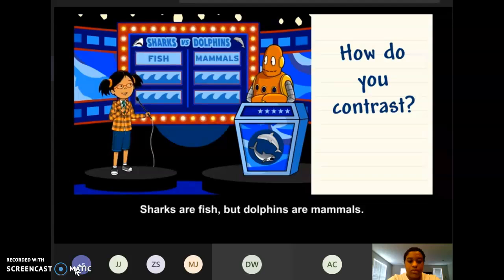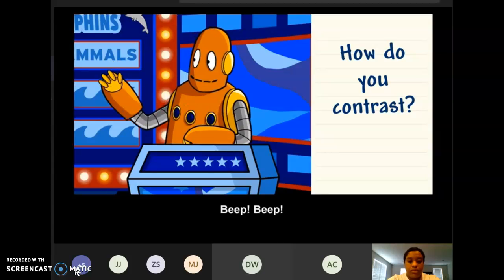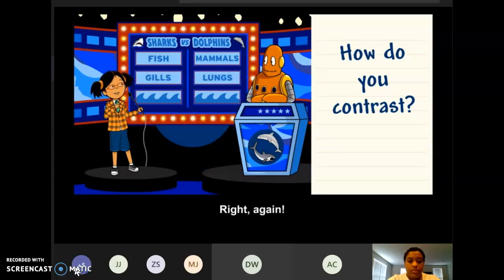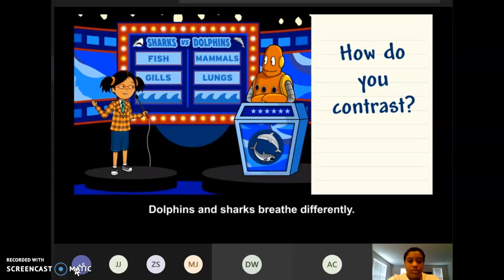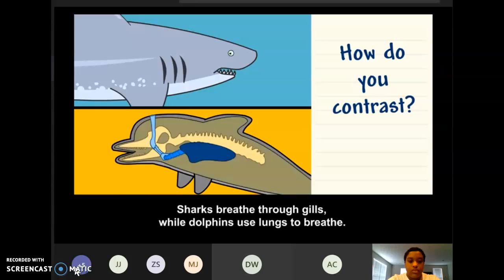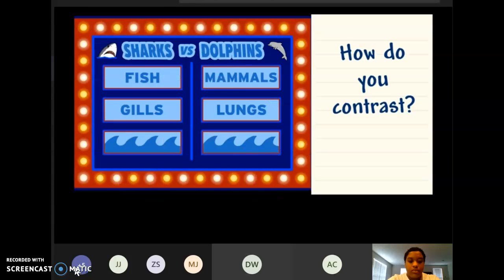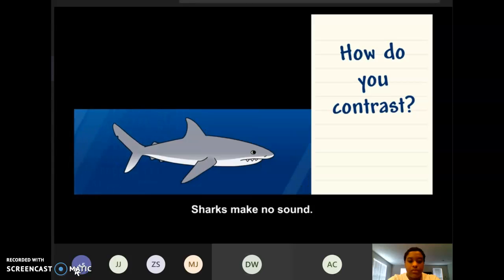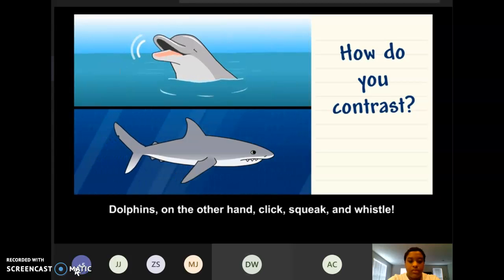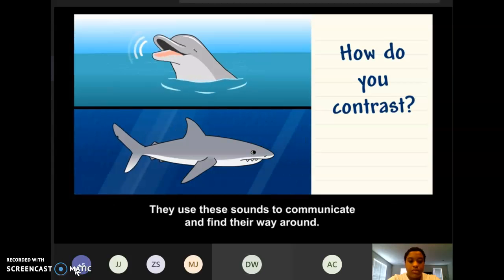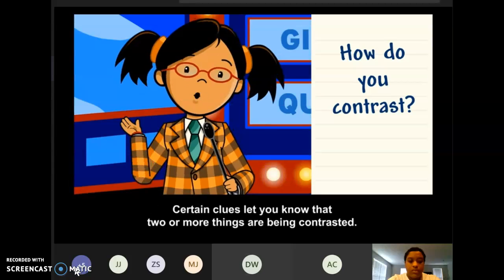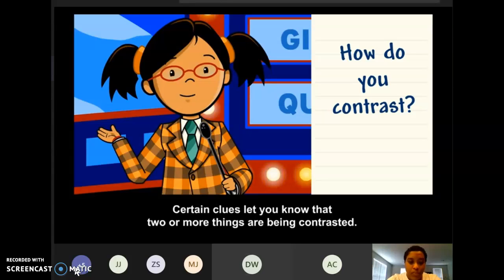Right, Moby. Sharks are fish, but dolphins are mammals. Right again. Dolphins and sharks breathe differently. Sharks breathe through gills, while dolphins use lungs to breathe. You're on a roll, Moby. Sharks make no sound. Dolphins, on the other hand, click, squeak, and whistle. They use these sounds to communicate and find their way around.